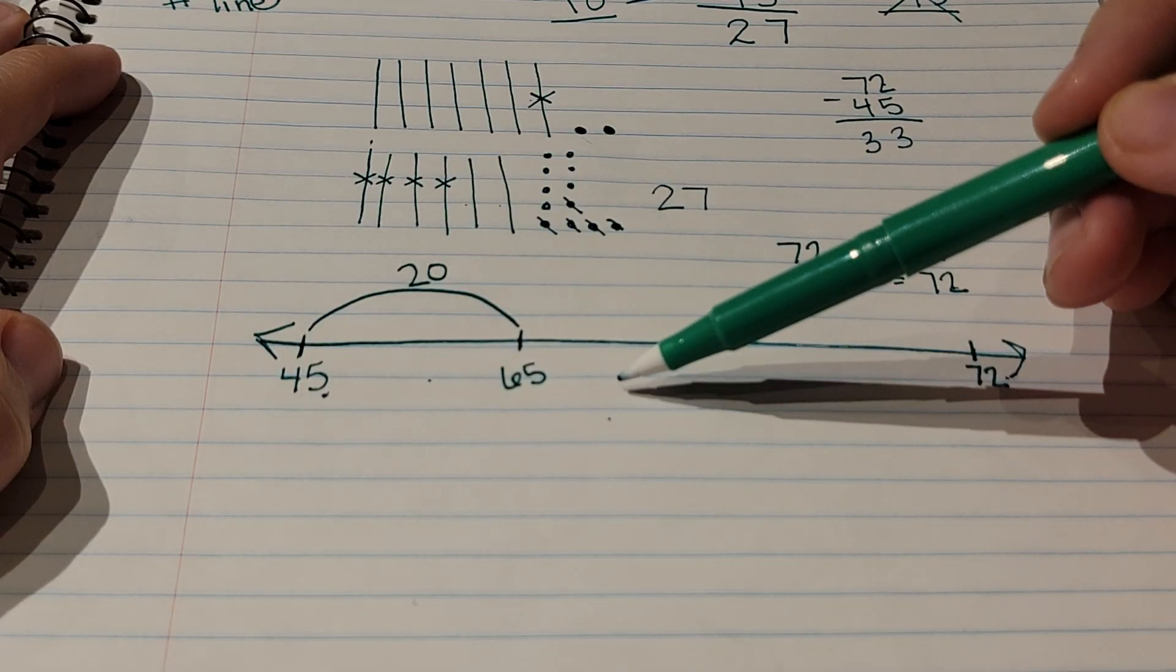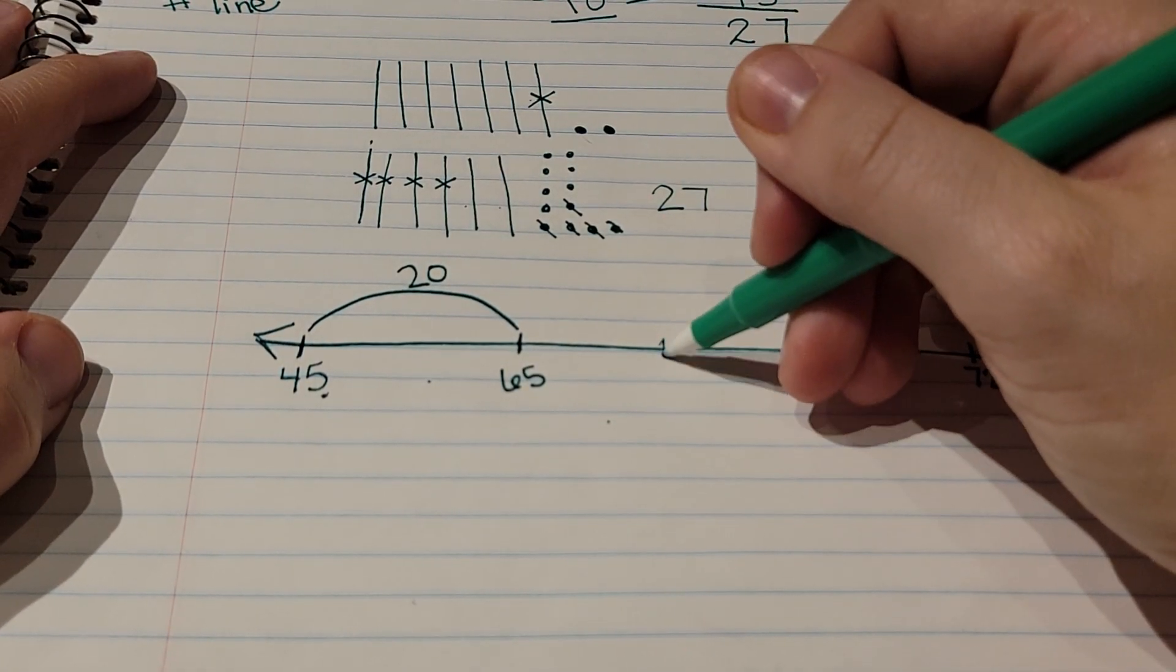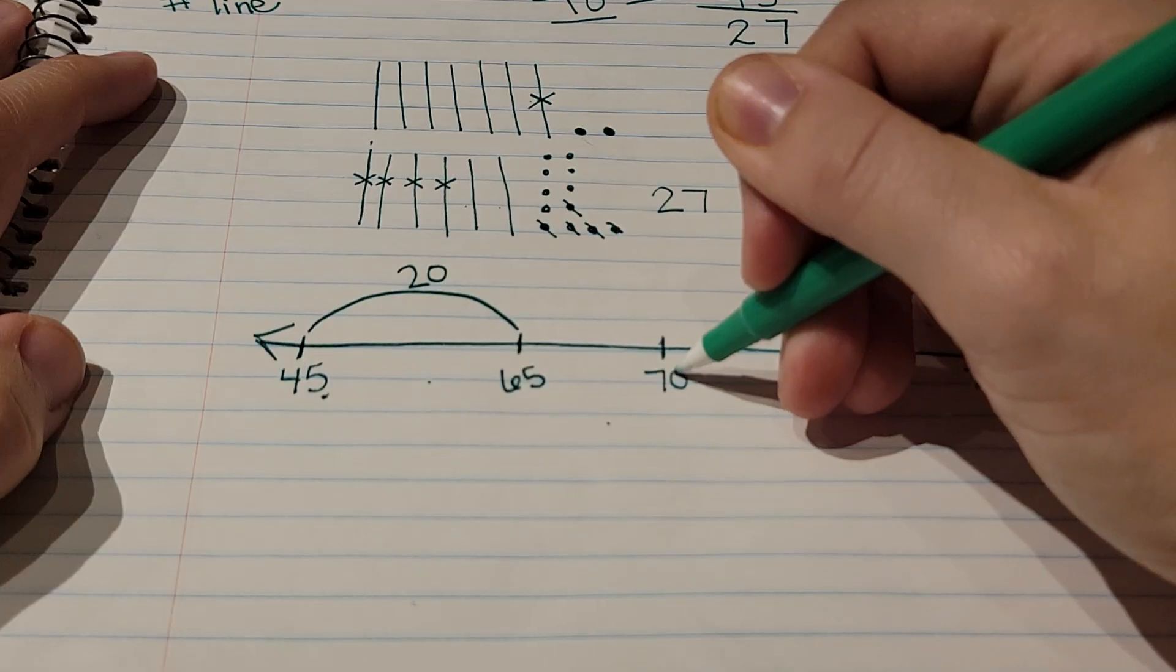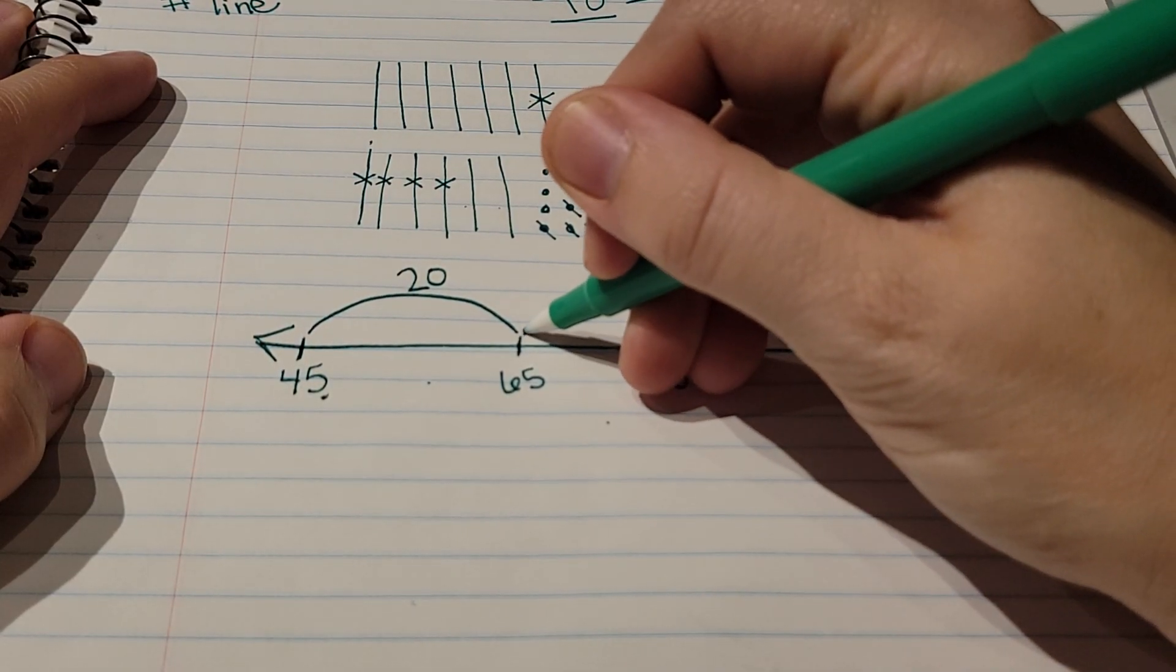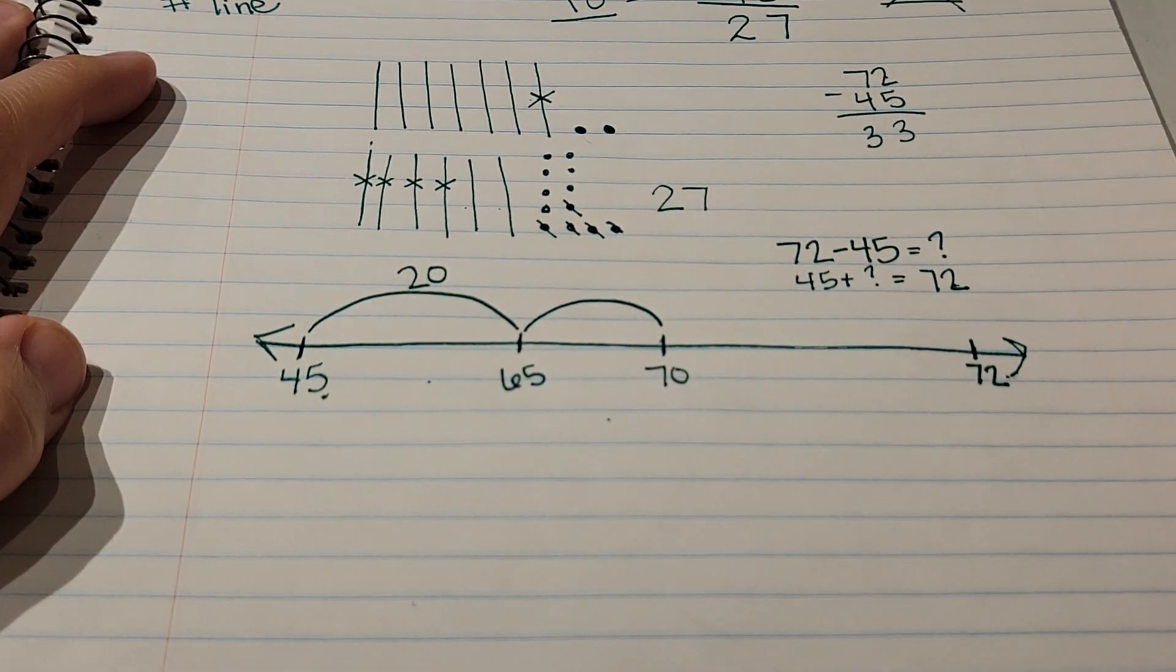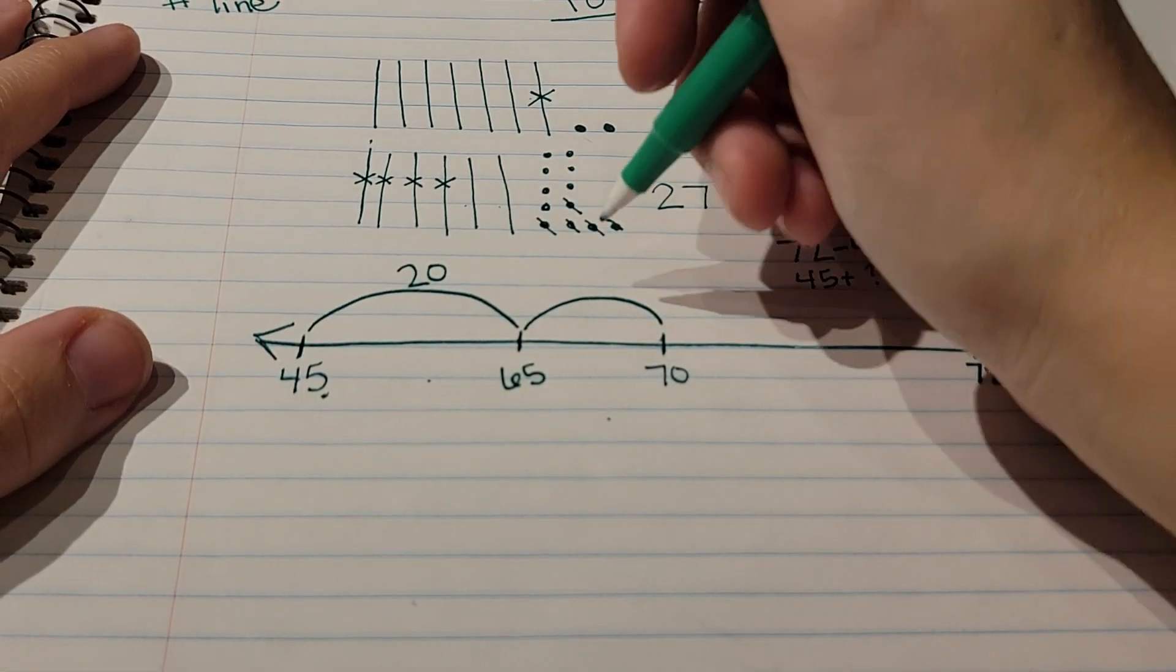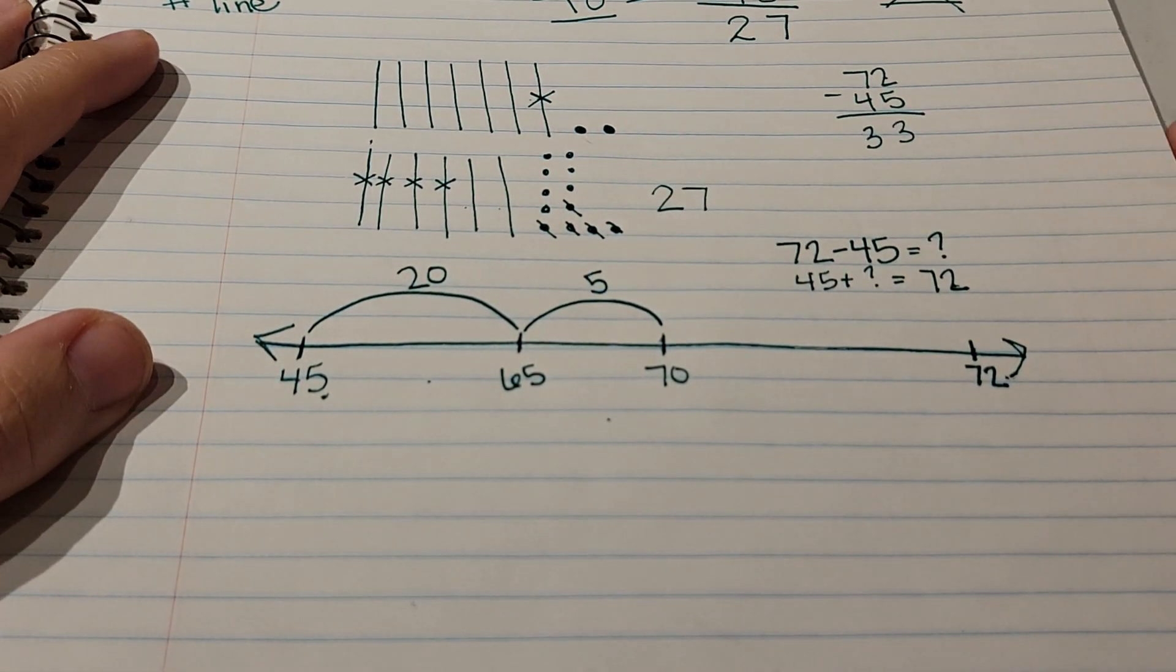I always have them tell me the two tens that 65 is in between. It's in between 60 and 70. So what's the next 10? And they would tell me it's 70. So I'm going to write 70 on the line, and then I have to figure out how many jumps it takes from 65 to 70. Well, that's 5 jumps, so I label that with a 5.